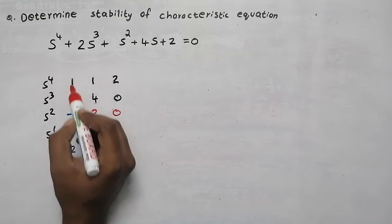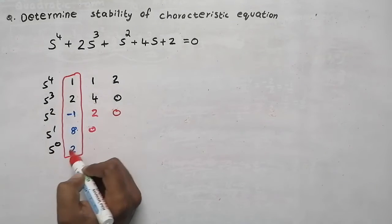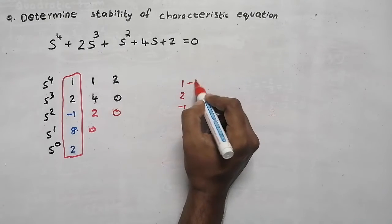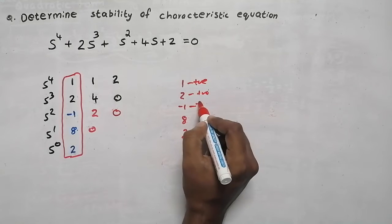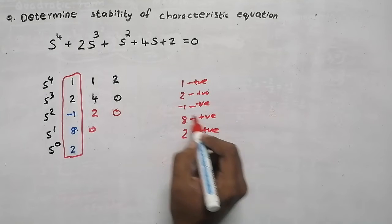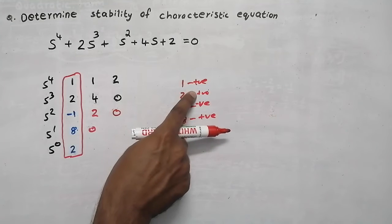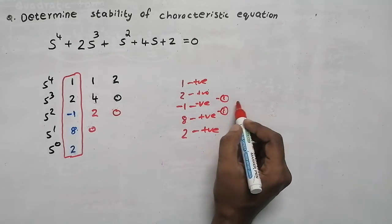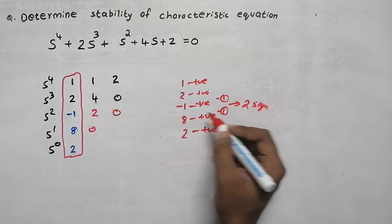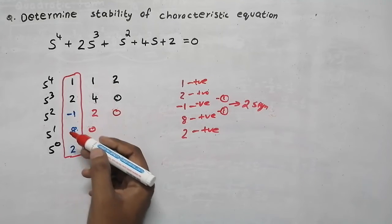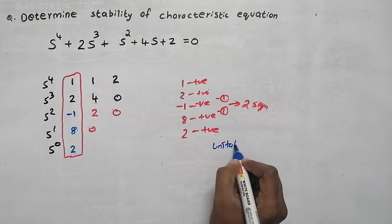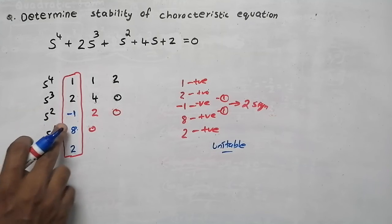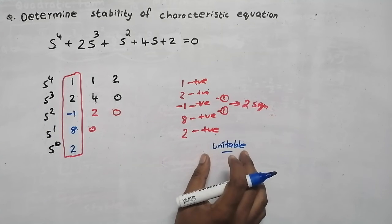Now determine the stability of the system by taking the first column elements: 1, 2, minus 1, 8, 2. This first value is positive, second is positive, then there is a negative value — a sign change occurs. Then from negative to positive, another sign change occurs. There are totally two sign changes. Because sign changes occur, the system is an unstable system. If any element in the first column is negative, a sign change will occur, and the system is unstable.